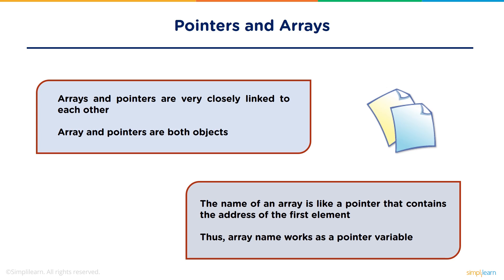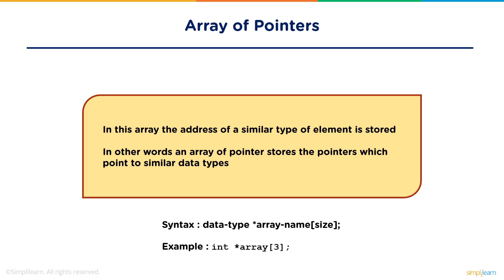In an array of pointers, like in a regular array we store similar type of elements, the difference is that instead of storing elements, the address of similar type of elements is stored. In other words, it stores pointers which point to the same data type. The syntax is: data type, then name of array with an asterisk sign, then the size of the array in brackets.